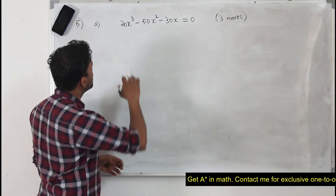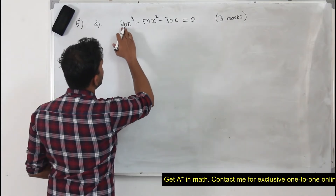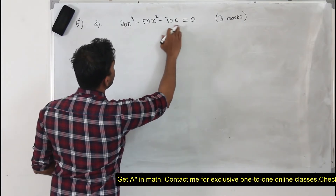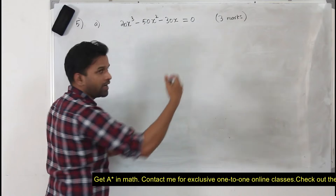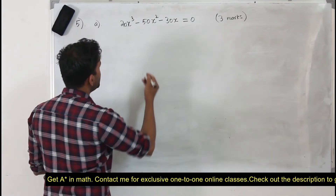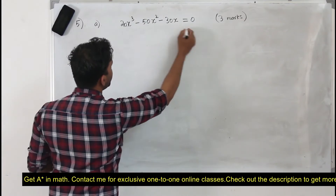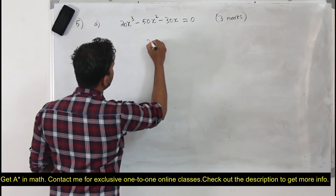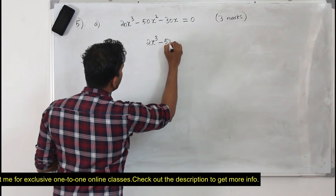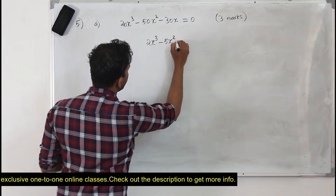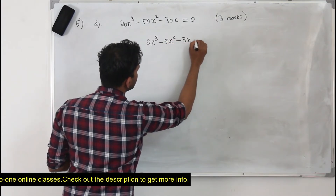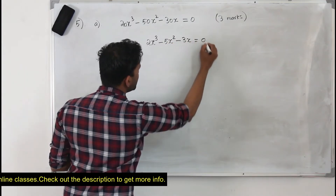But before moving on to solving this, you can divide every term by 10, which will be much easier. So if you divide everything by 10, you get 2x cubed minus 5x squared minus 3x equals 0.